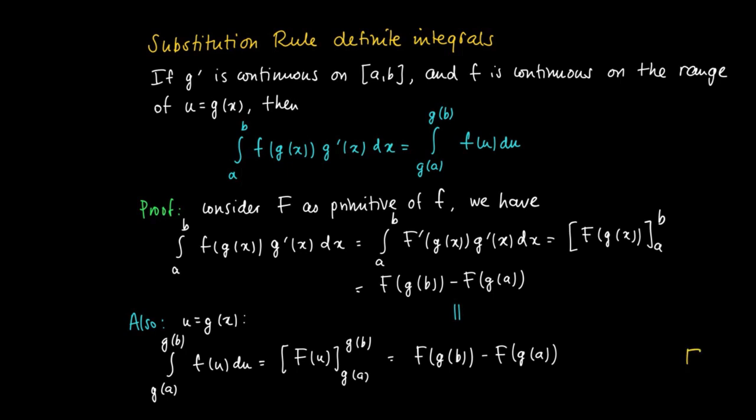So basically we are done here with the proof. Now you may question what are these regularity assumptions about, about g prime being continuous, f being continuous.